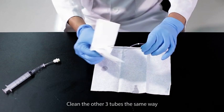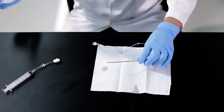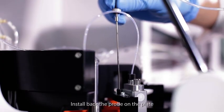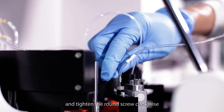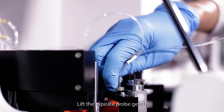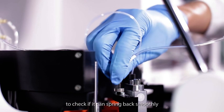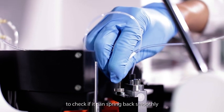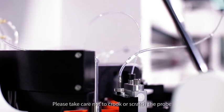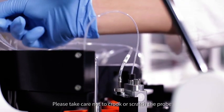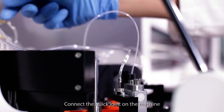Clean the other three tubes the same way. Install back the probe on the plate and tighten the round screw clockwise. Lift the aspirate probe gently and check if it can spring back smoothly. Please take care not to crook or scratch the probe. Connect the quick joint on the machine.